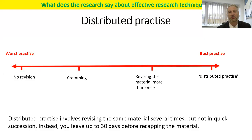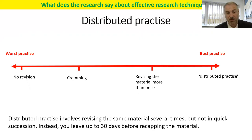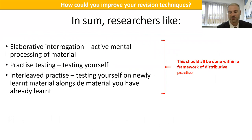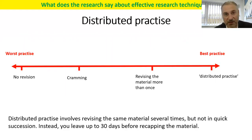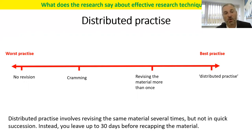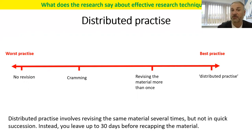Distributed practice is where you do things over a long period of time. Ask yourself: where are you on this grid — no revision, cramming, revising material more than once, or distributed practice? If you're cramming the night before, that's a recipe for disaster — your short-term memory is rubbish and things will leak out the other side. Revising material more than once is really effective, but the minimum number of times you should do it is at least 10 — that's the minimum to move things into your long-term memory and avoid the forgetting curve.